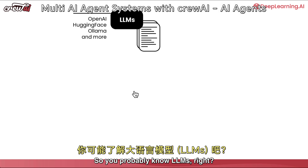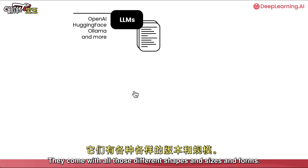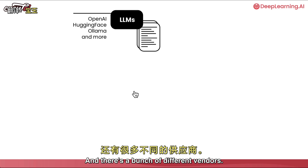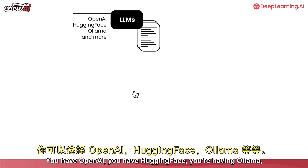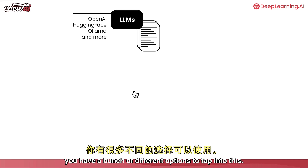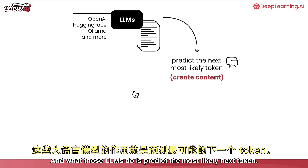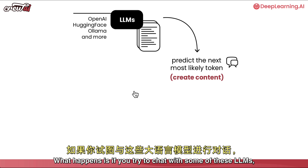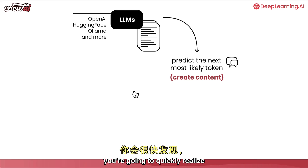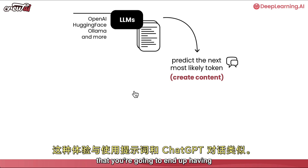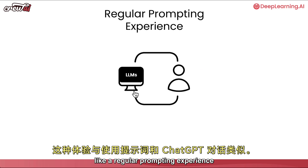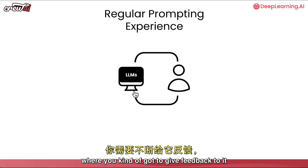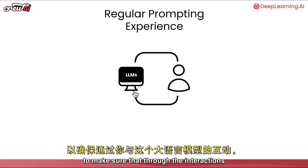You probably know LLMs - they come in all different shapes, sizes, and forms. There's a bunch of different vendors: you have OpenAI, you have Hugging Face, you have Llama, and a bunch of different options to tap into. What those LLMs do is predict the most likely next token. If you try to chat with some of these LLMs, you'll quickly realize you end up having a regular prompting experience, similar to what you get with ChatGPT, where you've got to give feedback to make sure you get the result that you need.